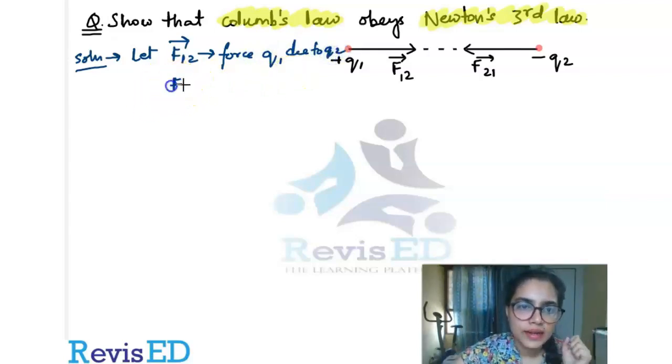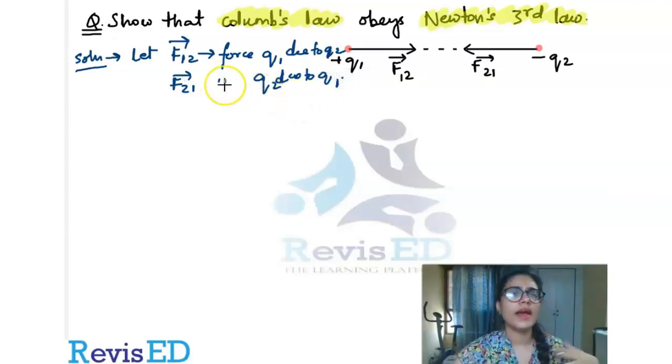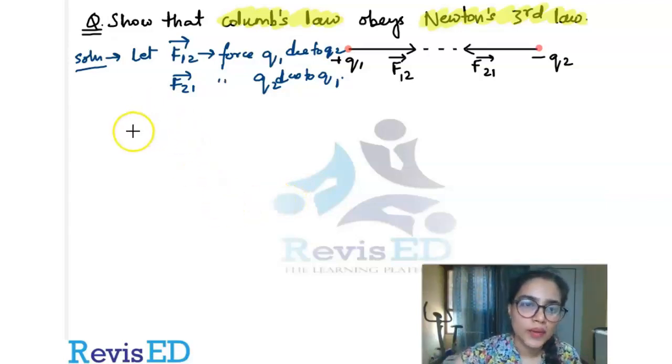Similarly, let F21 be the force on Q2 due to Q1. So we have noted that F12 is the force at charge 1 due to the presence of charge 2, and vice versa for F21. So what is happening is we can write this using the position vector.